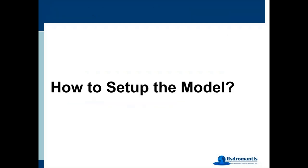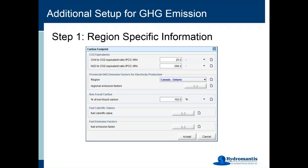Coming to model setup — what you need to do in addition to the general process modeling you normally do. The first step is specifying region-specific information. There is a menu in the model where you can specify the CH4 to CO2-equivalent ratio and N2O to CO2-equivalent ratio. By default, values are based on IPCC AR4: 25 times and 298 times respectively. We provide the option for users to change these values if needed.